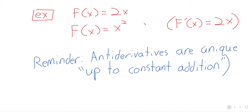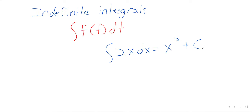x² is a perfectly fine antiderivative of 2x. If all you're asked is to find an antiderivative, x² is a solution. But when we're finding indefinite integrals, we're looking for all of the antiderivatives at once, so the plus C has to be there. If I erased it, I would have an error on the whiteboard — that plus C is mandatory.